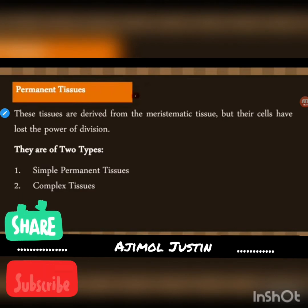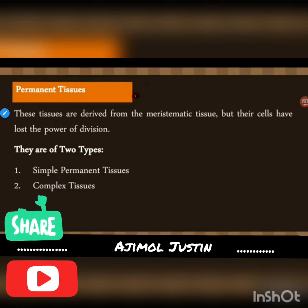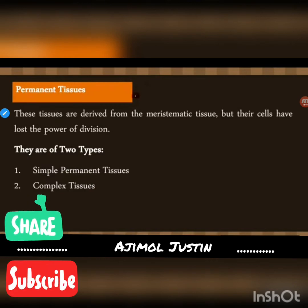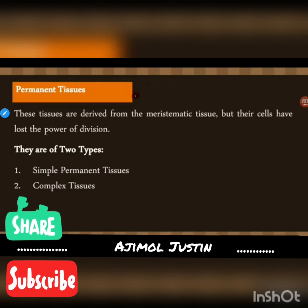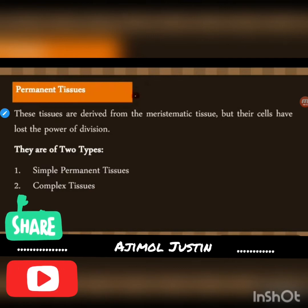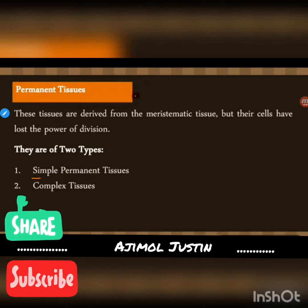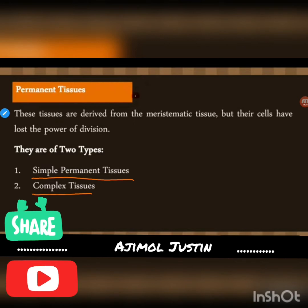The next type of tissue is permanent tissue. These tissues are derived from meristematic tissue, but the main difference is that these cells have lost the power of division. Permanent tissue cannot divide or re-divide, and it is of two types: simple permanent tissue and complex tissues.